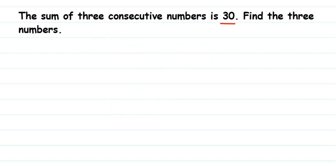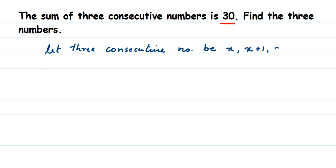They have given that the sum of the three consecutive numbers is 30. So let the three consecutive numbers be x, x plus one, and x plus two. This assumption of x, x plus one, x plus two remains the same whenever you solve any question involving three consecutive numbers. Now we form an equation: x plus (x plus one) plus (x plus two) equals 30. This is the linear equation we need to solve.